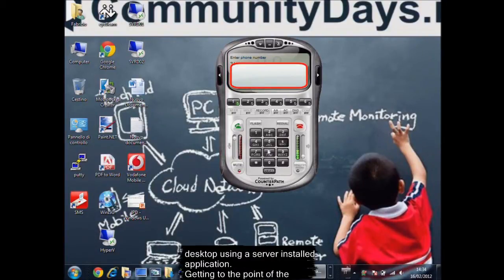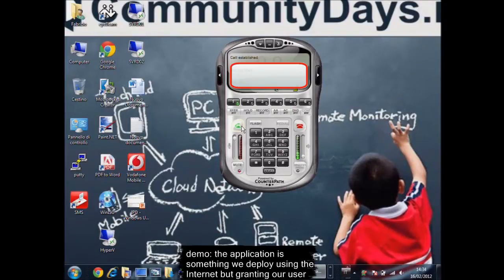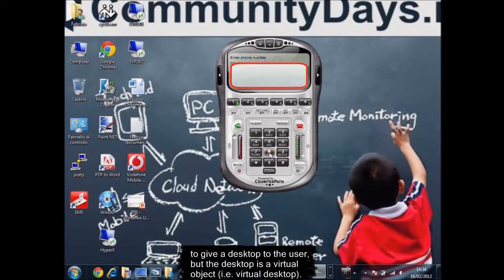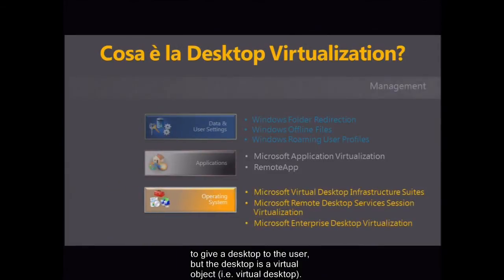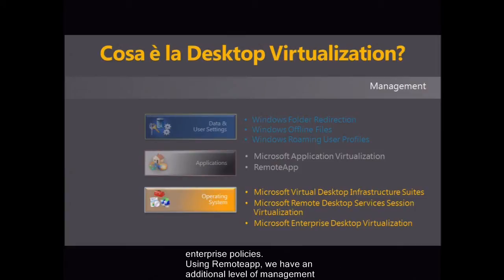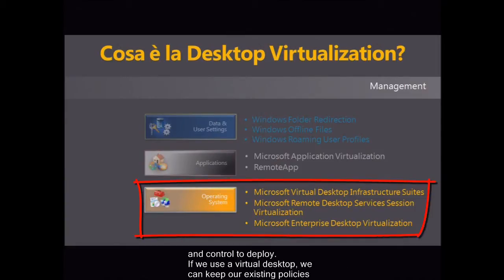The application is something we deploy using the Internet but granting our user that his or her settings and data will always be there. The last step is we still want to give a desktop to the user, but the desktop is a virtual object — a virtual desktop. One of the big advantages of virtual desktops is that we don't have to change our enterprise policies. Using remote app, we have an additional level of management and control to deploy. If we use a virtual desktop, we can keep our existing policies and management habits and tools.